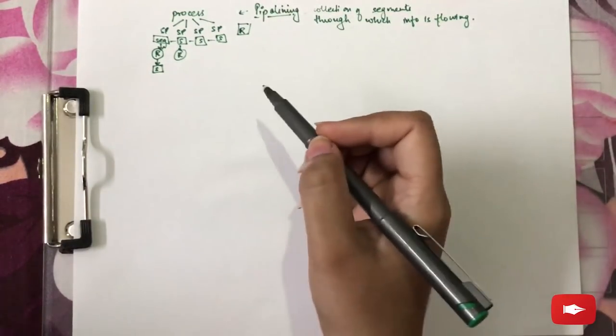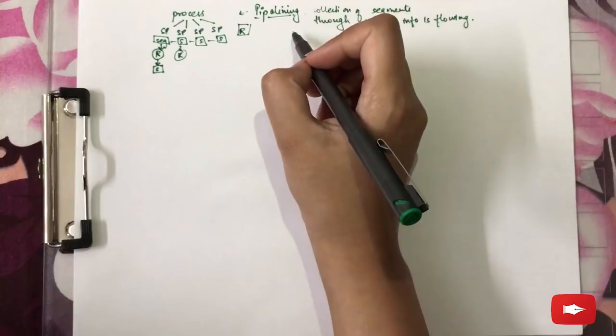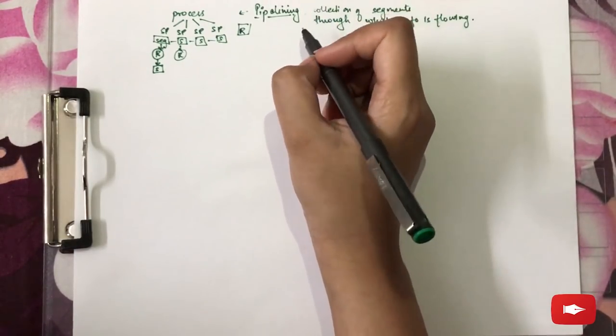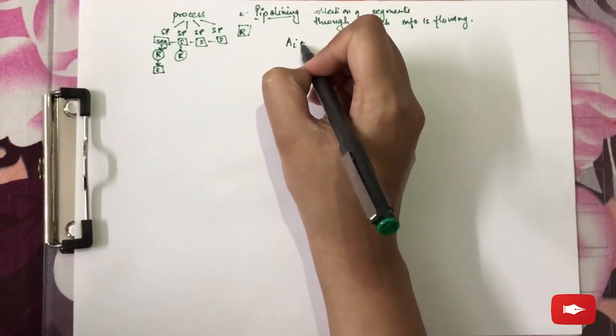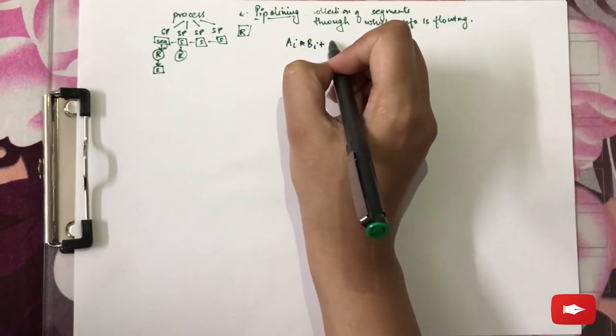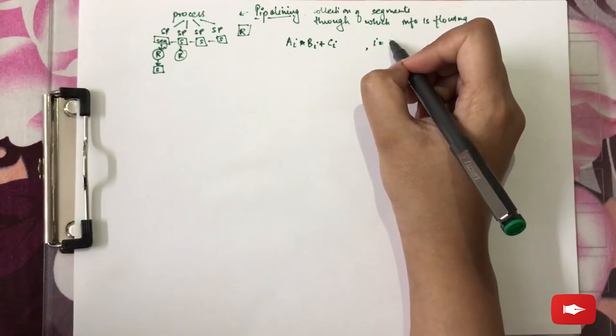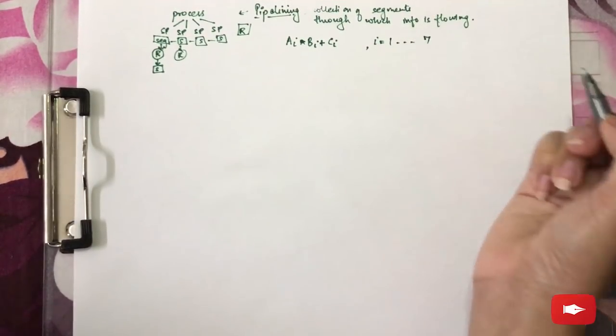Let's demonstrate the process of pipelining through an example where we will consider a combination of operations saying ai multiplied by bi plus ci where i is the number of bits 1 to 7.